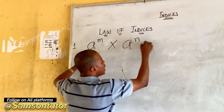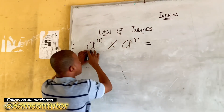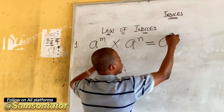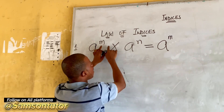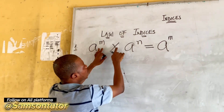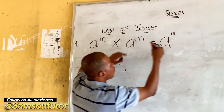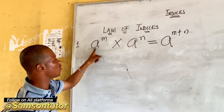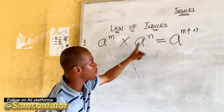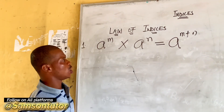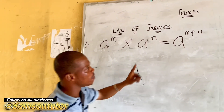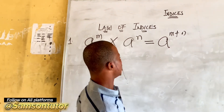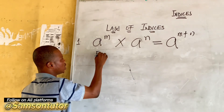The same base is 'a', and the powers are m and n. When the bases are multiplying, the powers add up. So a raised to power m times a raised to power n equals a raised to power m plus n. We take one of the bases and the powers are added.